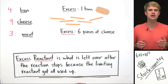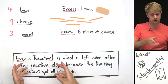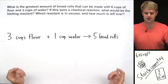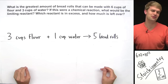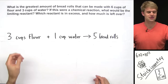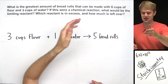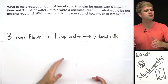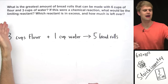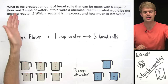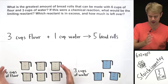Now that we've talked about the concepts behind limiting reactant and excess reactant, let's use this information to solve some more advanced problems. This looks more like a chemical equation, but we're still cooking. I'm pretending this is a recipe for bread rolls — just flour and water. We're going to use this recipe to solve the following problem: what is the greatest amount of bread rolls that can be made with six cups of flour and three cups of water? If this were a chemical reaction, what would be the limiting reactant, which reactant is in excess, and how much is left over?